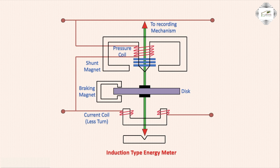This is the pressure coil. This coil mainly creates the pressure or magnetic flux, which is why the rotating machine or disc cannot rotate freely.